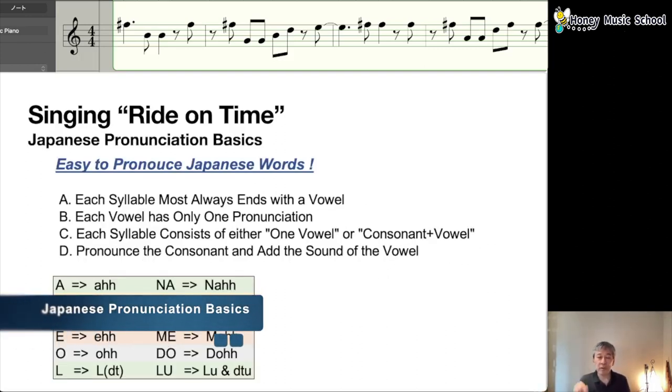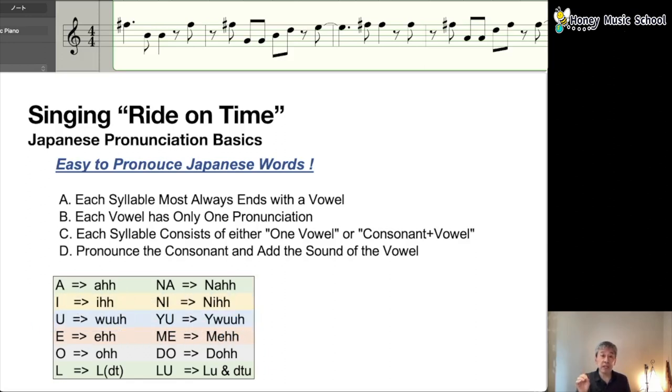Alright, so let's just go through the basics of Japanese pronunciation again. Singing right on time. Four points. A: Each syllable must always, most always, ends with a vowel. B: Each vowel has only one pronunciation, one way to pronounce it. Just going to go through the bottom.